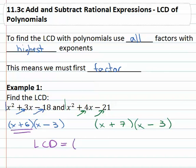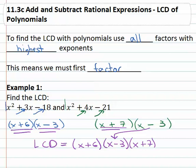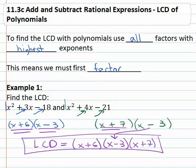There's an x plus 6 and x minus 3. We see an x plus 7, and you'll notice we already have x minus 3, so we don't need to write it again. We are done then with each factor represented, no exponents to worry about on this example. The least common denominator is x plus 6 times x minus 3 times x plus 7.